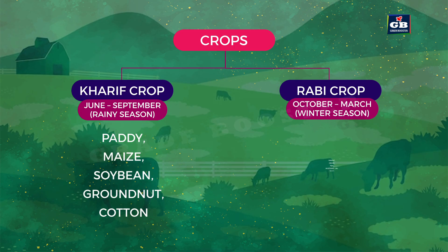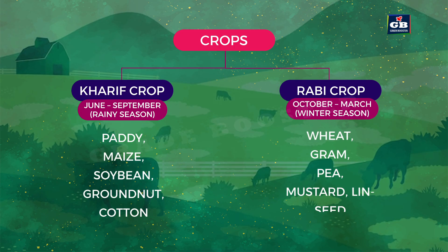Rabi crops are winter season crops. They grow between October to March. Examples: wheat, gram, pea, mustard, and linseed.